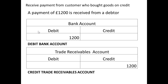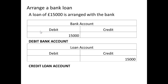If we receive payment from a customer who bought goods on credit — a payment of $1,200 received from a debtor — we'll debit the bank account, because obviously we've got the money in the bank now, and we credit the trade receivables, which reduces the amount that we are owed.